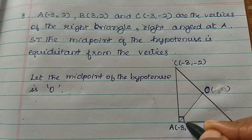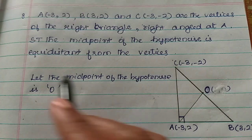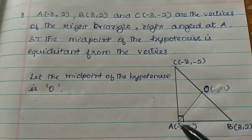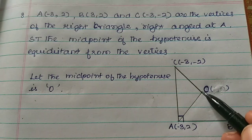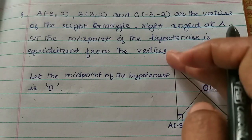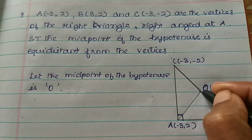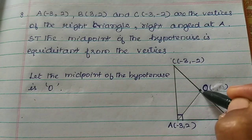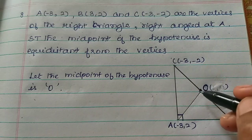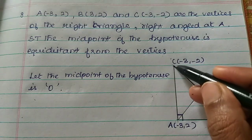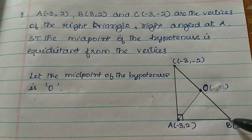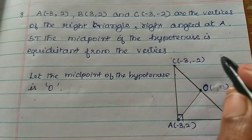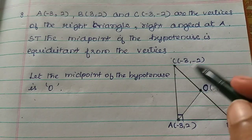The right angle is at A. Show that the midpoint of the hypotenuse — the side opposite the right angle — is equidistant from the three vertices. The midpoint is equal distance from the three vertices.